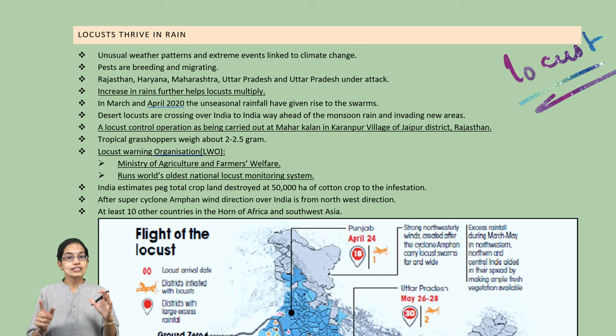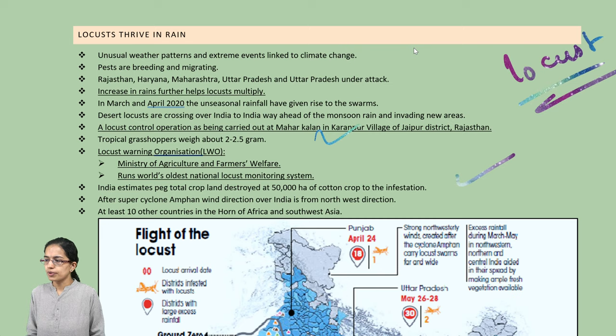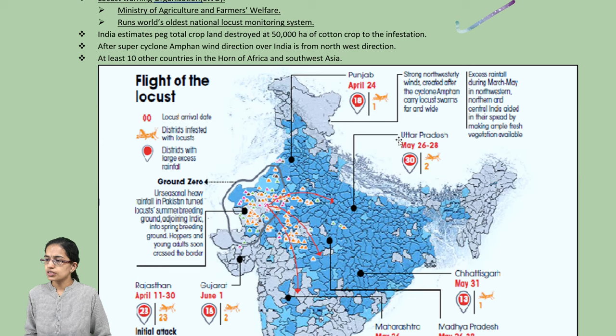The Locust Warning Organization, which is run by the Ministry of Agriculture and Family Welfare, is one of the oldest national locust monitoring systems. It is believed that nearly 50,000 hectares of cotton crop has been destroyed because of the infestation, caused mainly in the regions of Rajasthan, Haryana, Madhya Pradesh, and Maharashtra.